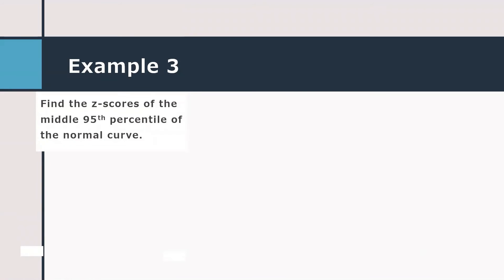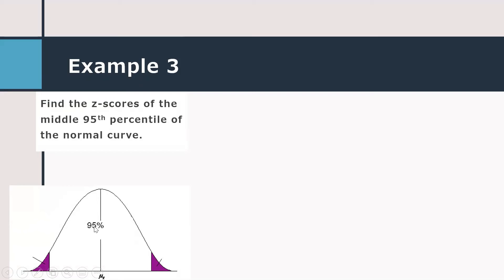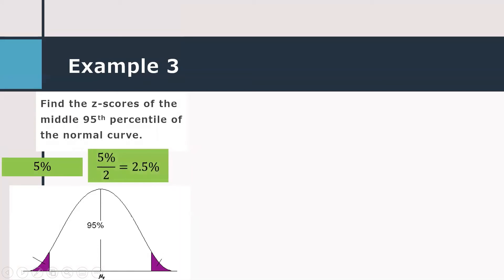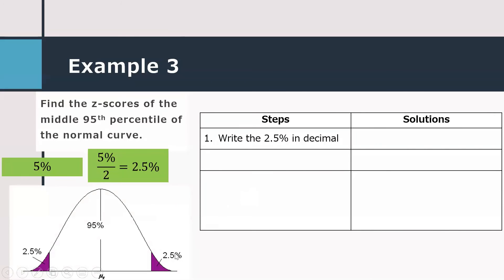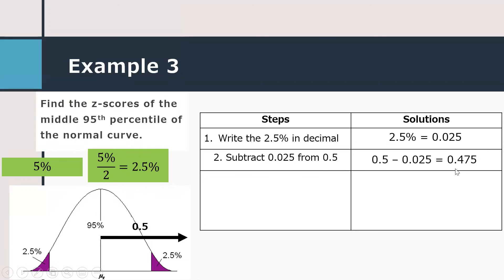Now let's have example number three: Find the z-score of the middle 95% of the normal curve. The middle 95% lies between two z-scores, one negative and one positive. There is still 5% remaining; we divide it by 2 for the two ends of the distribution, giving 2.5% on each end. We rewrite 2.5% in decimal as 0.025, and subtract 0.025 from 0.5, giving a difference of 0.475.